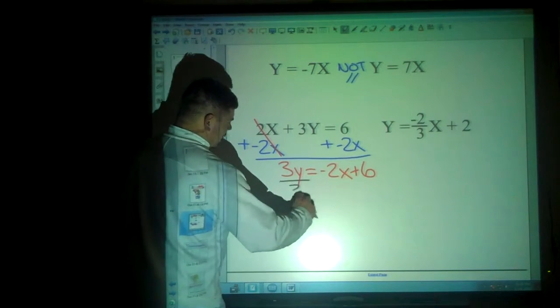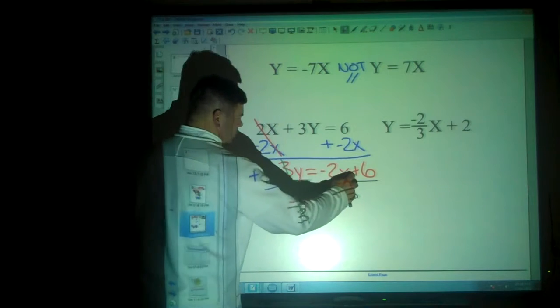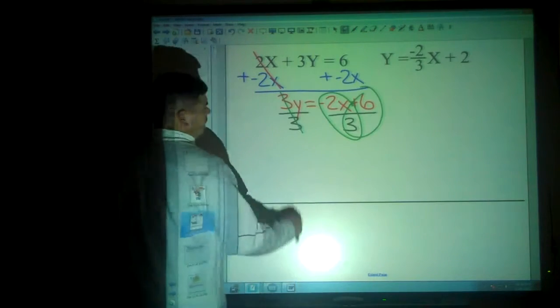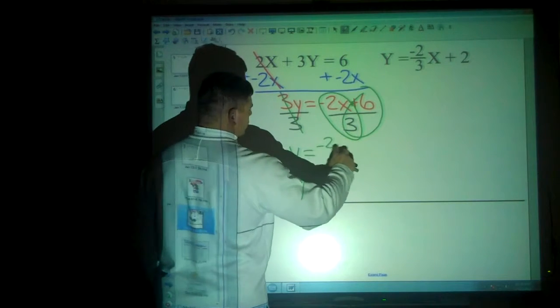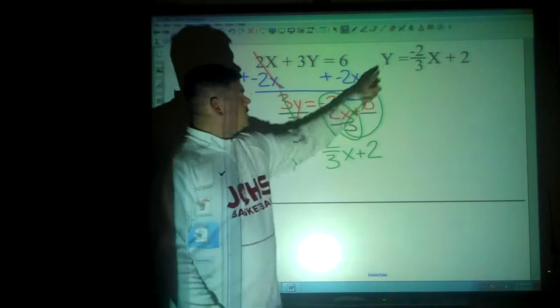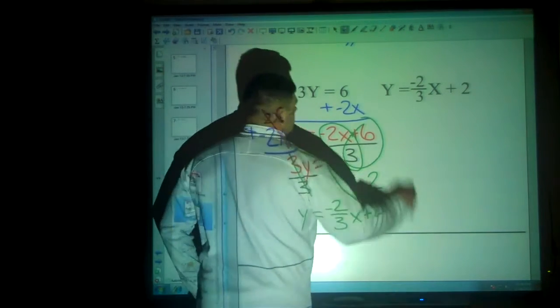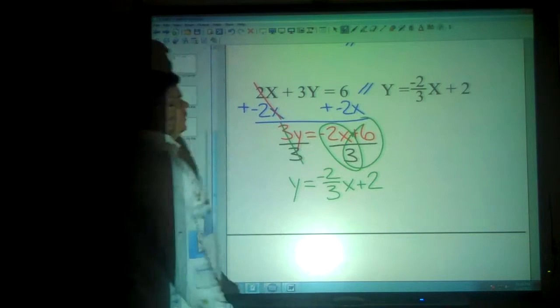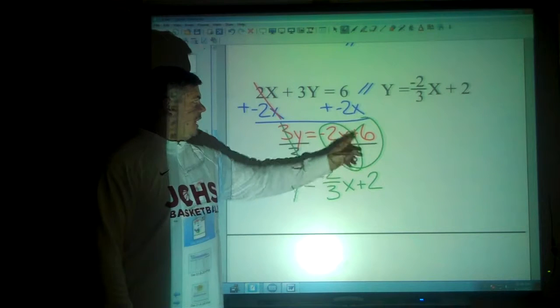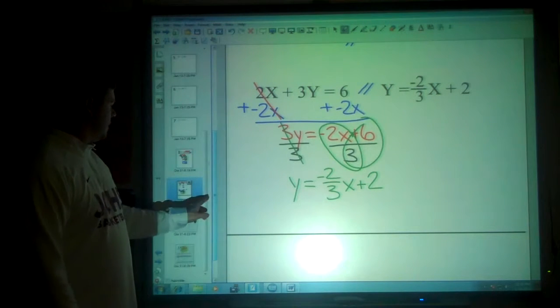And then we would divide by 3, which will set us up to use our heart-shaped division. And we end up with y equals negative 2 thirds x plus 2. Negative 2 thirds and negative 2 thirds, which means these two are parallel. It doesn't look like it has the same slope, but if we play the shuffling game and get it into slope-intercept form, we recognize the fact that they do have the same slope.